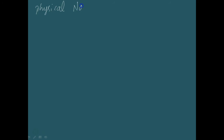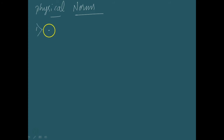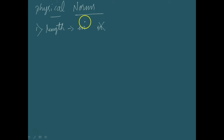Now let us study some of the physical norms for the use of the SI system. Whenever you write SI units, we should keep in mind some physical norms on how to use those SI units. The first one is: the unit of every physical quantity should be represented according to its symbol. The usage of a symbol is a must and that usage must be correct. For length, the symbol we use is 'm' for meter — we can't use any other symbol. We should use symbols only to represent units.